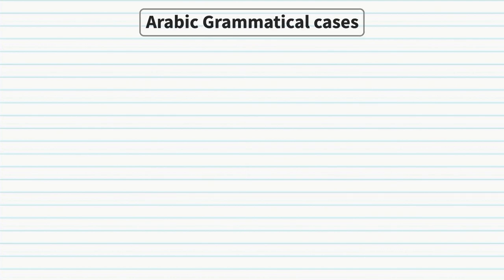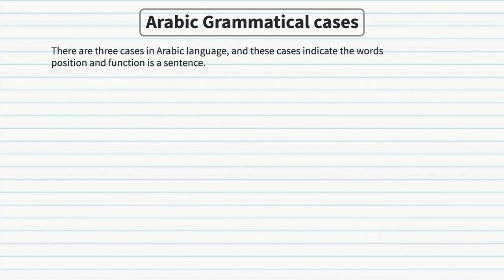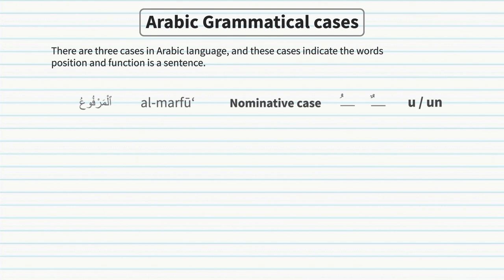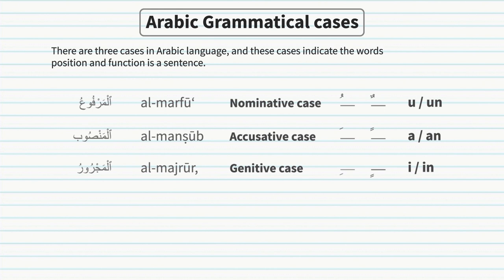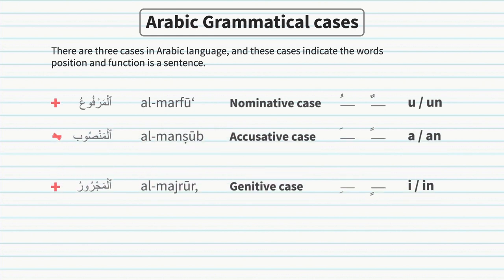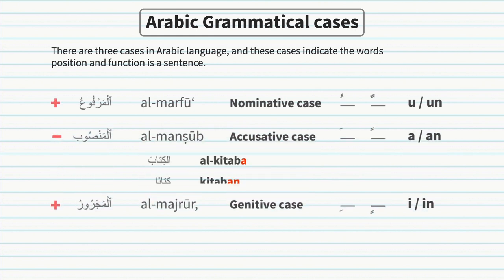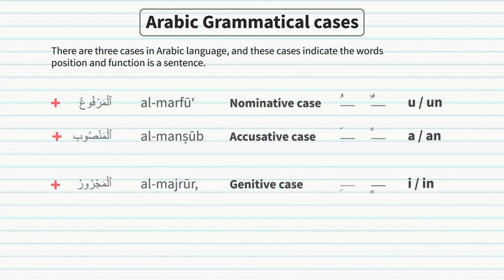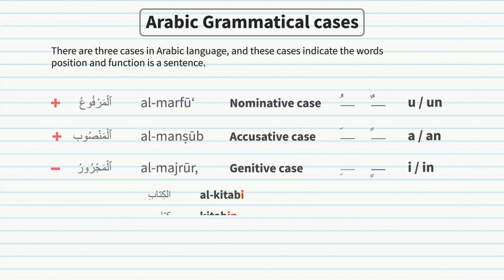Arabic grammatical cases: there are three cases in Arabic, which indicate a word's position and function in a sentence. The three cases are: nominative case (al-marfu'), accusative case (al-mansoob), and genitive case (al-majroor). In this introduction we will briefly focus on the genitive case and how a word's case can change based on its position in a sentence.